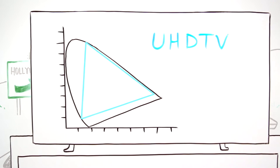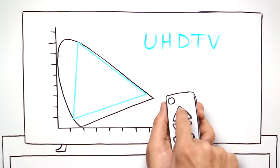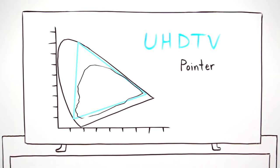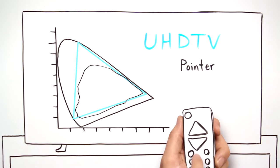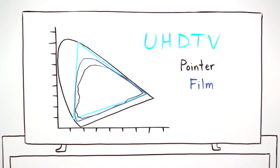With the advent of the new UHDTV standard BT-2020, digital video almost fully encompasses the pointer color gamut and more closely matches the color gamut of film.